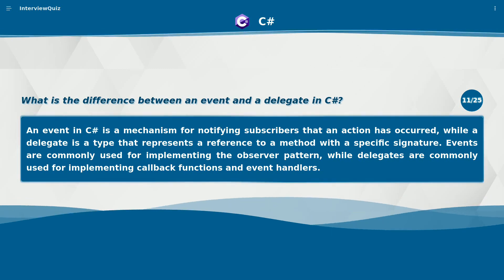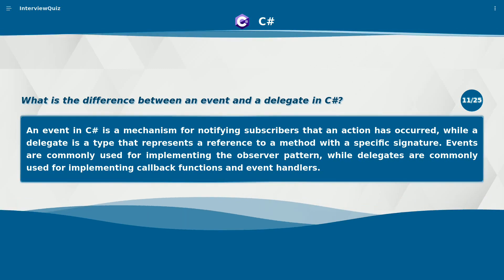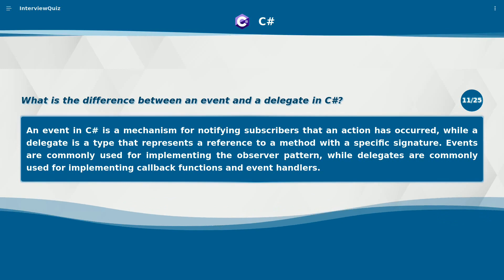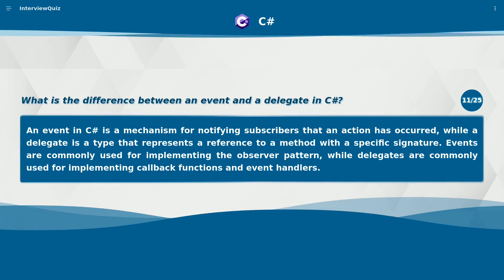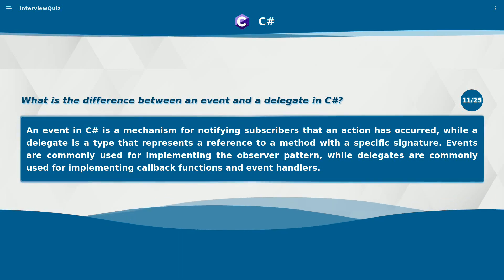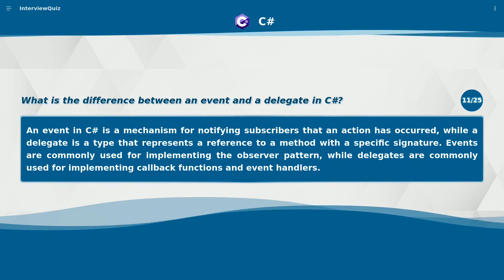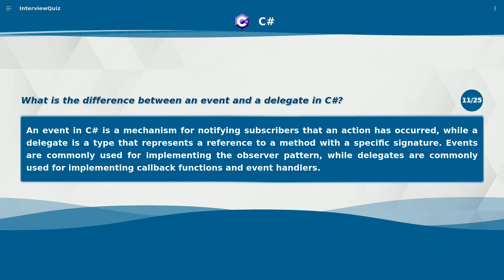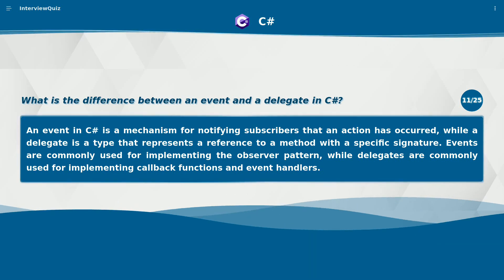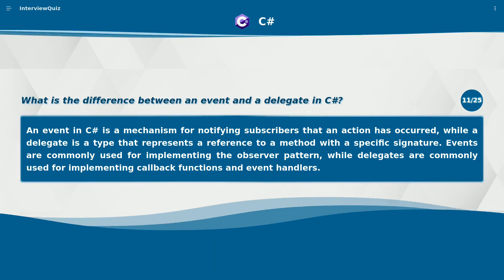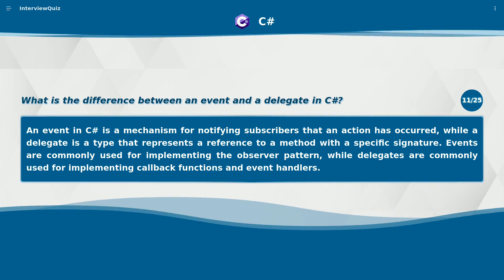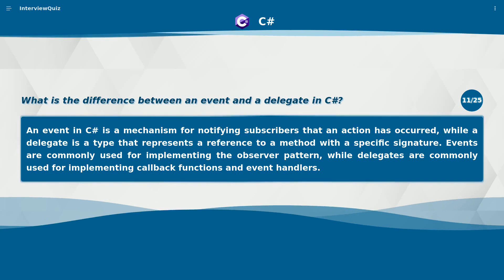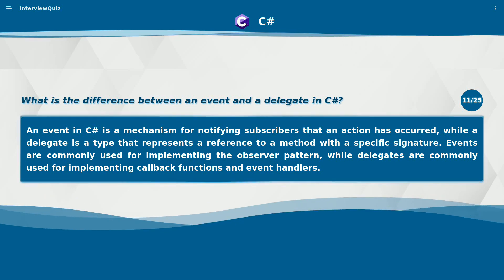An event in C# is a mechanism for notifying subscribers that an action has occurred, while a delegate is a type that represents a reference to a method with a specific signature. Events are commonly used for implementing the observer pattern, while delegates are commonly used for implementing callback functions and event handlers.